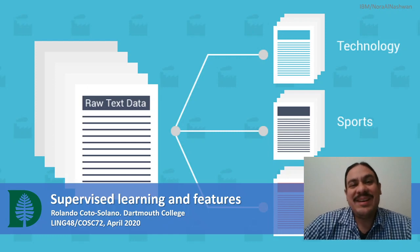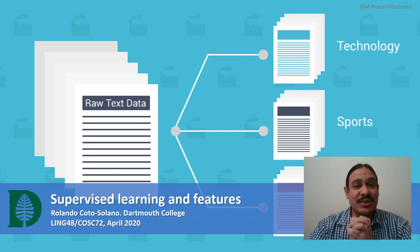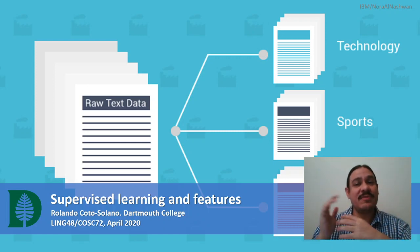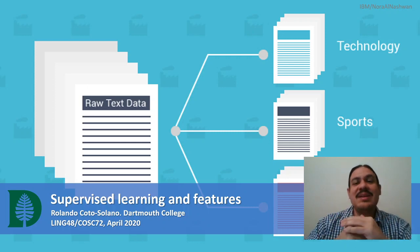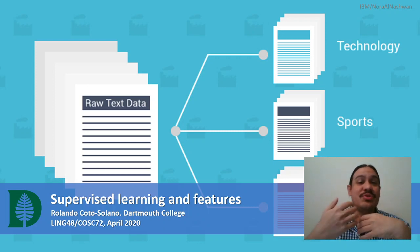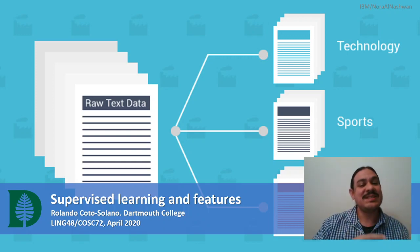Hi and welcome to week five. This week we're going to study two techniques for supervised learning: Naive Bayes classifiers and support vector machines, and how they can be used for natural language processing. But in order to do that, we first need to look at the structure of supervised learning.